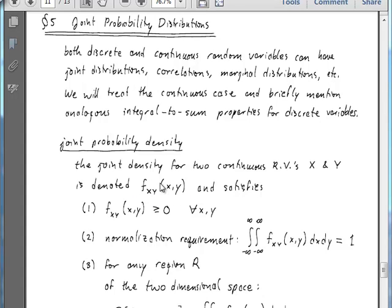This thing satisfies a couple of properties. One, it's always positive or non-negative, which is the same as we required for probability densities in the case of a single variable.